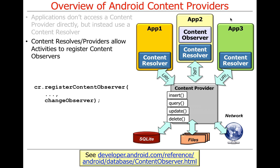Why would you use this mechanism? Without an observer, a client would have to poll — repeatedly asking: has this value changed? Has this image been downloaded? That would be painful to write and very inefficient to run.